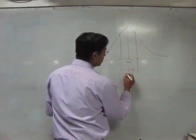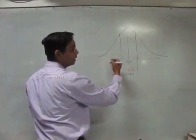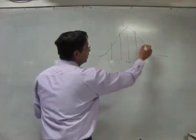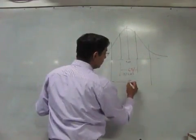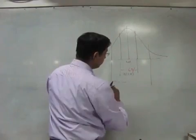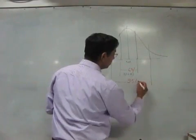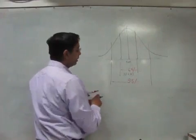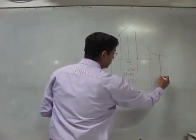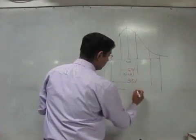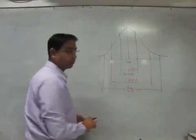Within plus or minus 1 SD, we have 68% of the population. Within 2 SD, this is equal to 95% of the population. And within 3 SD, this is equal to 99% of the population.